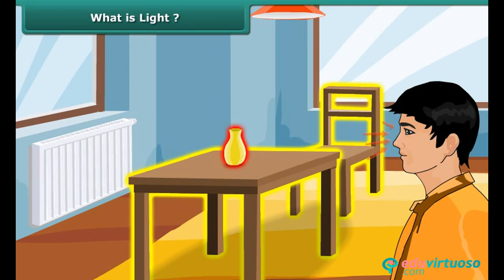This occurs in two ways. Either the object itself emits light, or it reflects the light falling on it from another light source.